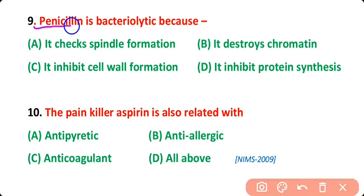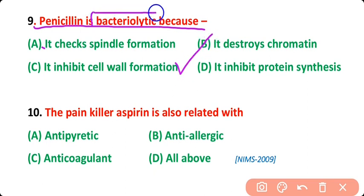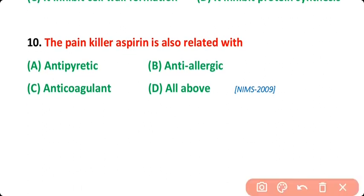Question number 9: Penicillin is a bacteriolytic antibiotic. Bacteriolytic antibiotics are those that dissolve the bacteria. The options were: it checks spindle formation, it destroys the chromatin, it inhibits cell wall formation, or it inhibits protein synthesis. The correct answer is option A — penicillin is bacteriolytic because it inhibits the cell wall formation of bacteria.